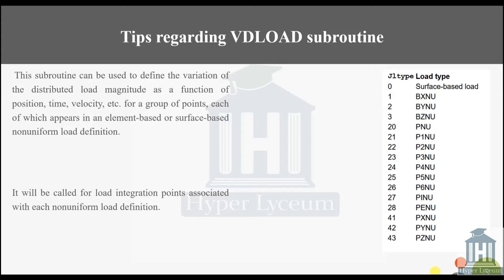JL type number 0 is used for surface-based load. JL type number 1 is for body force in the x-direction, number 2 for y, and 3 for z-direction. JL type number 27, called PIU, is used for pipe pressure where part type is wired and element type should be pipe.